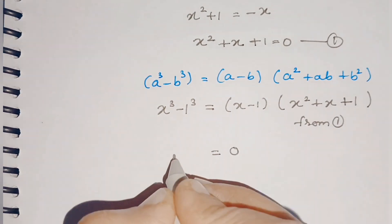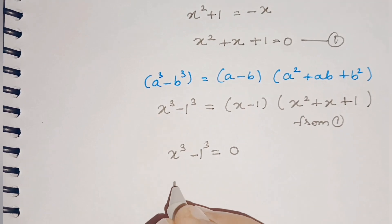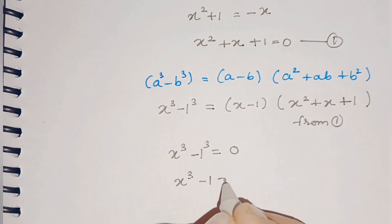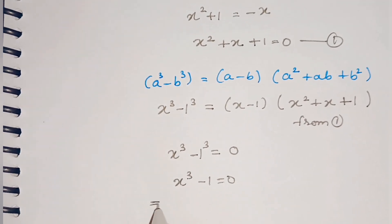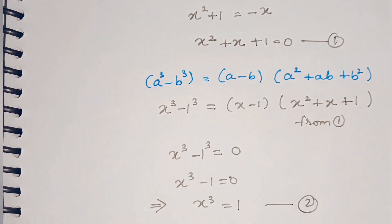So our right-hand side will be 0. That means x³ - 1 = 0, which implies that x³ = 1. We give it as equation 2.